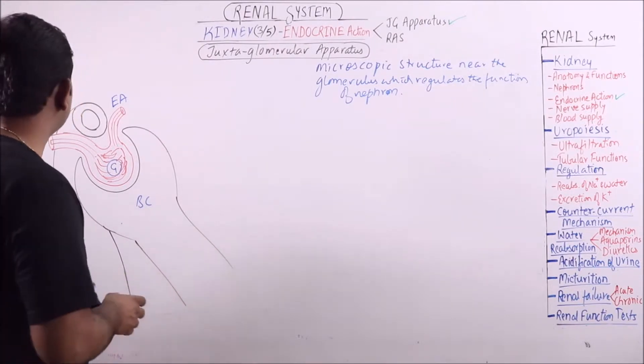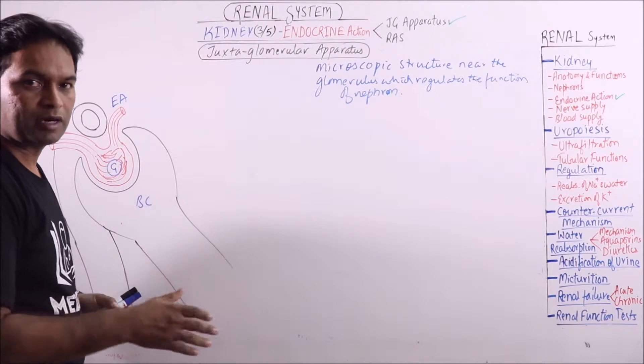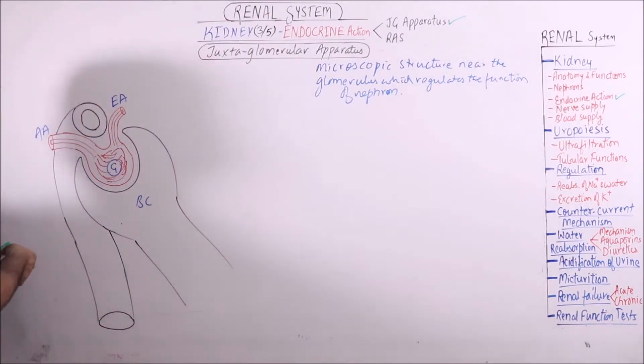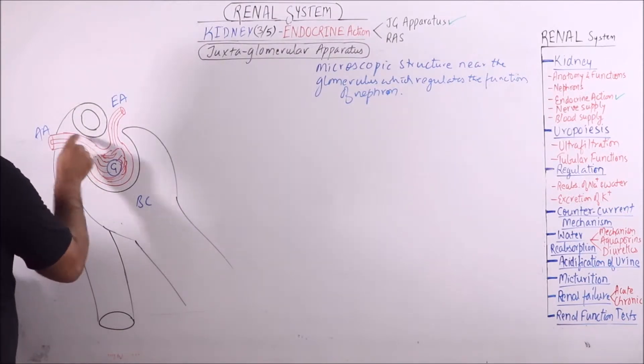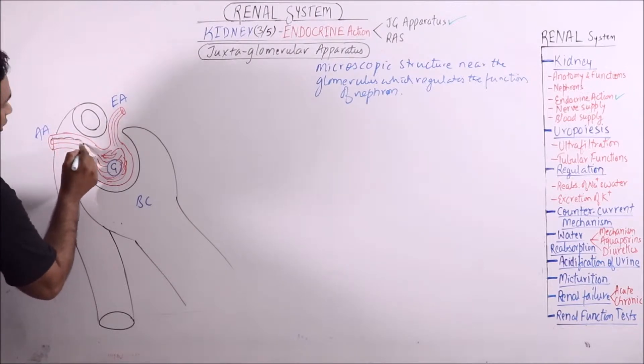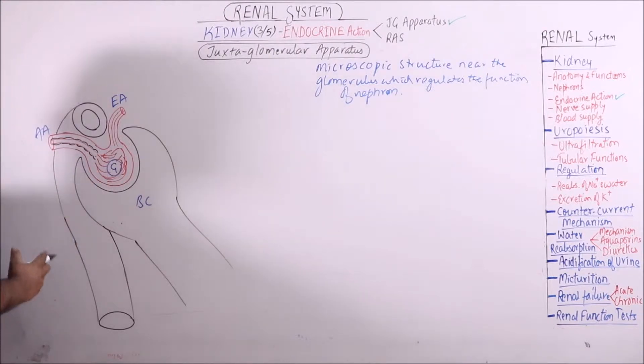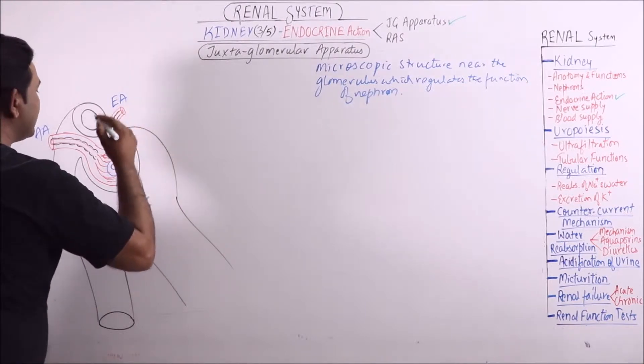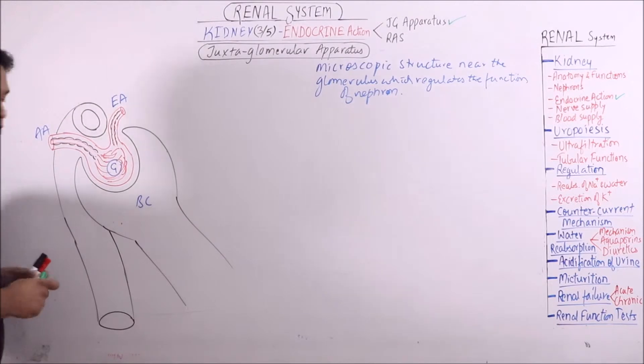Tunica externa is present in artery and vein but absent in arteriole and venule. So it is having two layers that is tunica media and tunica interna. This tunica interna which is made up of flat cells or squamous type of cells and the rest bulk of efferent arteriole and afferent arteriole is made up of tunica media. Tunica media is having the smooth muscle cells.